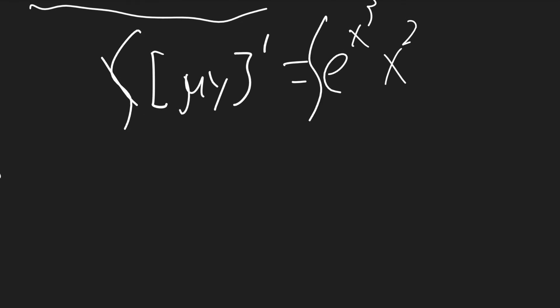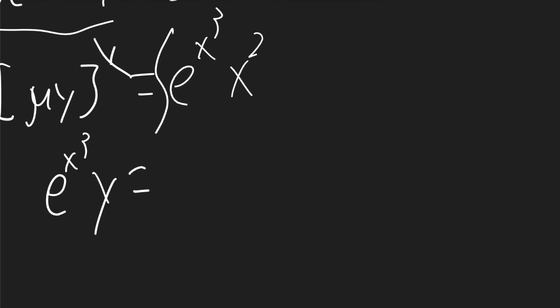On the left, the integral will cancel the derivative. And mu was e to the x cubed. That'll be times y. It's going to be equal to this term here.